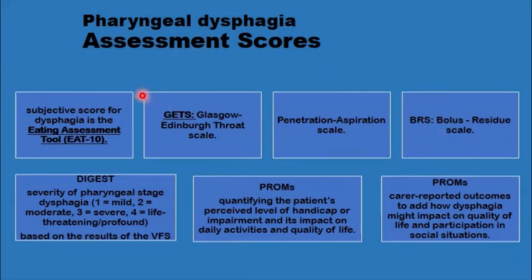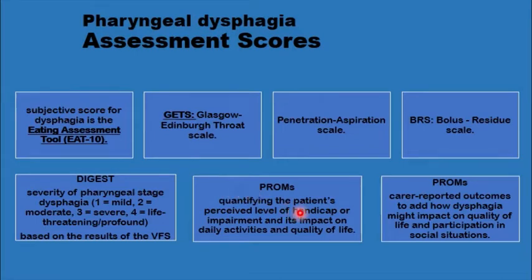All these scales have been validated. Some are subjective, reflecting patient symptoms: the Eating Assessment Tool (EAT-10), which reflects dysphagia symptoms; the Glasgow-Edinburgh Throat Scale, reflecting throat symptoms; and the PROMS, which quantifies how the patient perceives their handicap and how it affects their quality of life. The PROMS also allows the carer to quantify the patient's handicap and its impact on participation in social situations.